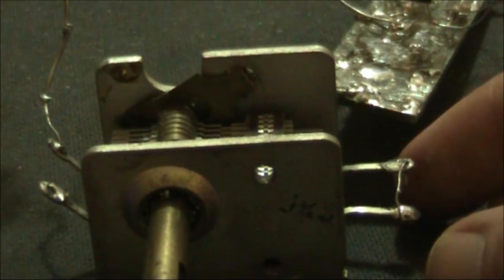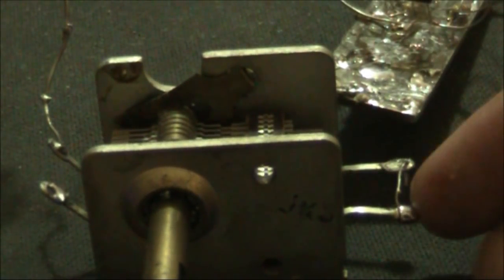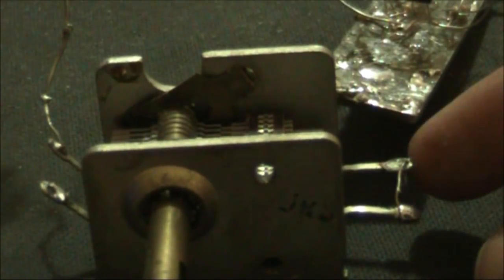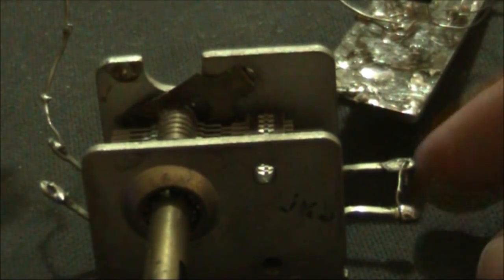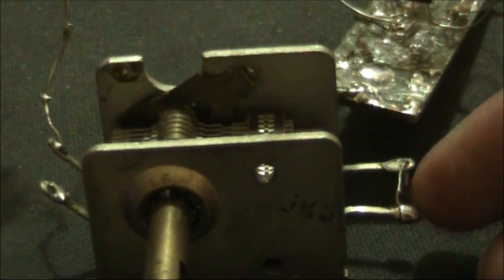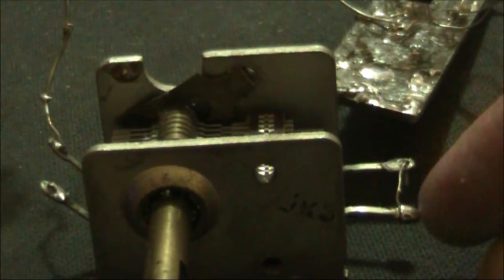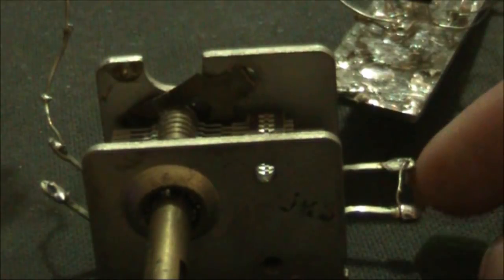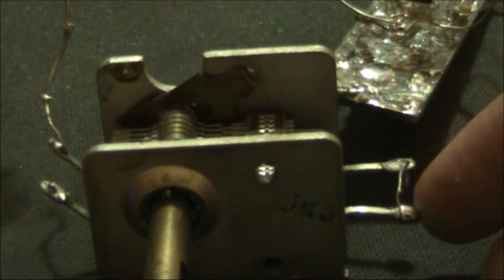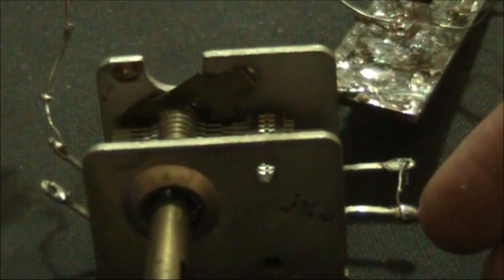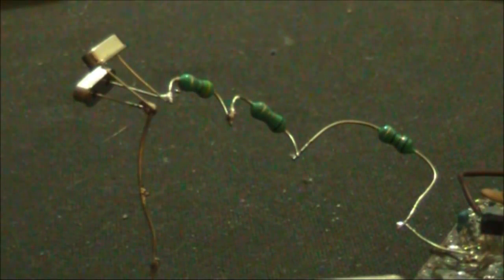As you can see where my finger is pointing, the two gangs of this variable capacitor are connected in parallel. That's good for low end frequency coverage, but if you want high end frequency coverage, you need to remove them to reduce the minimum capacitance of this variable capacitor. The other thing I'll do is remove these inductors entirely.